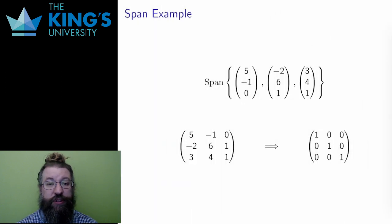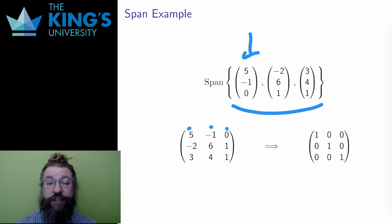Let me show some examples. Here is a span of three vectors in R3. I put the vectors into a matrix as rows. The first row is the first vector, 5, negative 1, 0. The second row is the second vector, negative 1, 6, 4. And the third row is the third vector, 3, 4, 1. Then I row reduce.